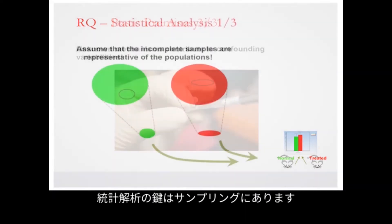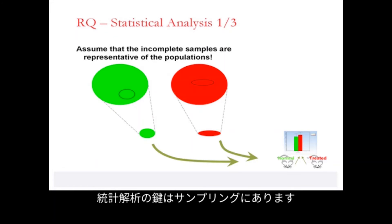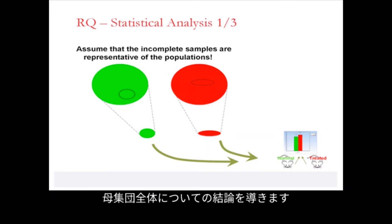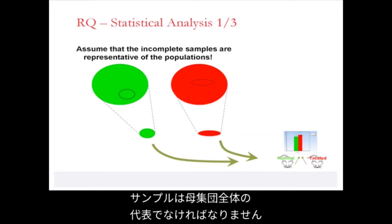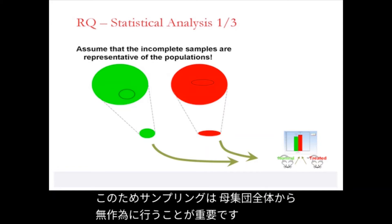The key to statistical analysis is the sampling. We obtain limited samples of each group, but we want to draw conclusions about the whole populations. We want samples to be representative of the entire population. It is therefore important that sampling is random over the entire population.